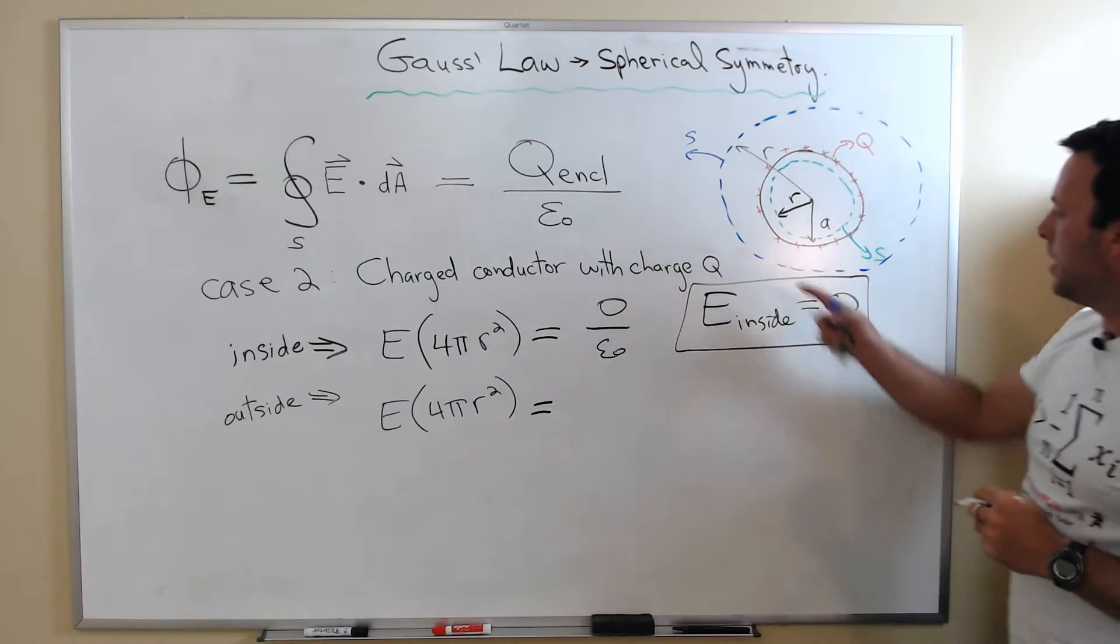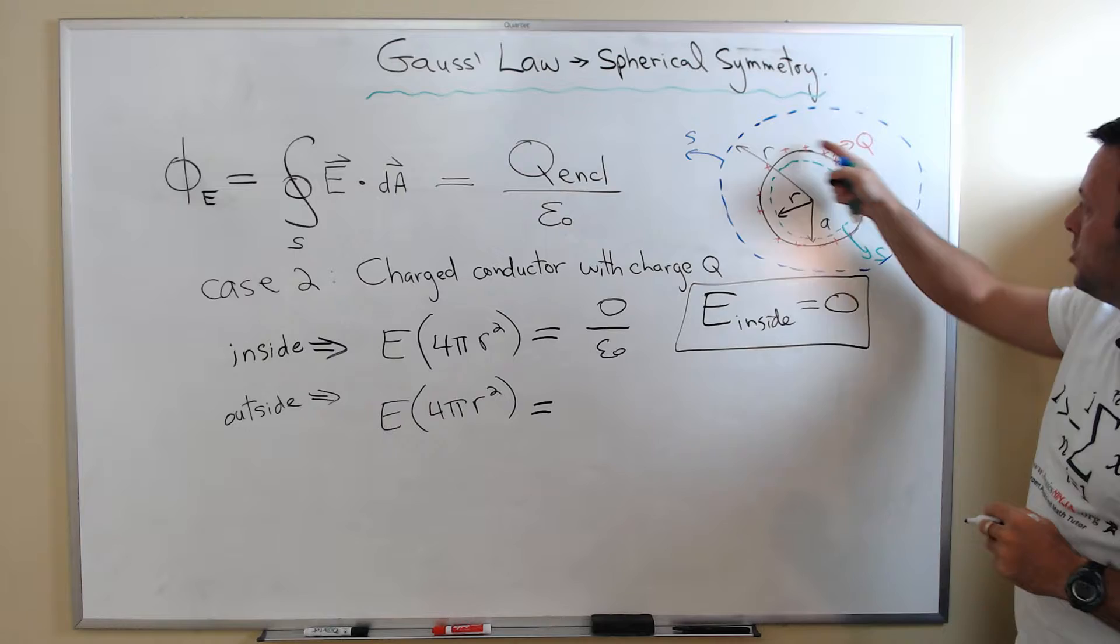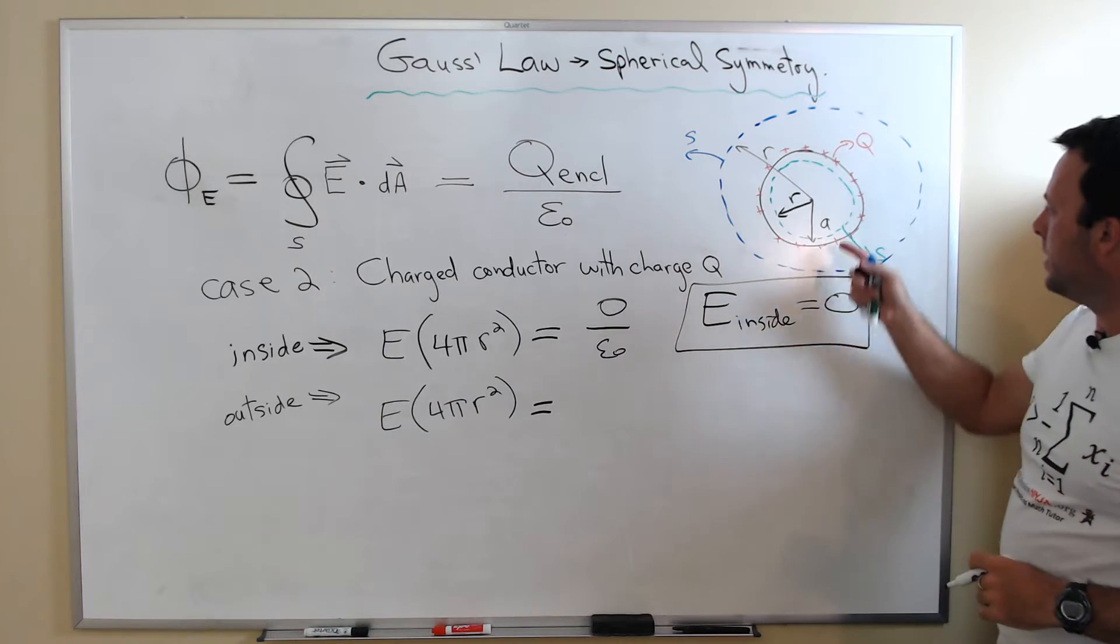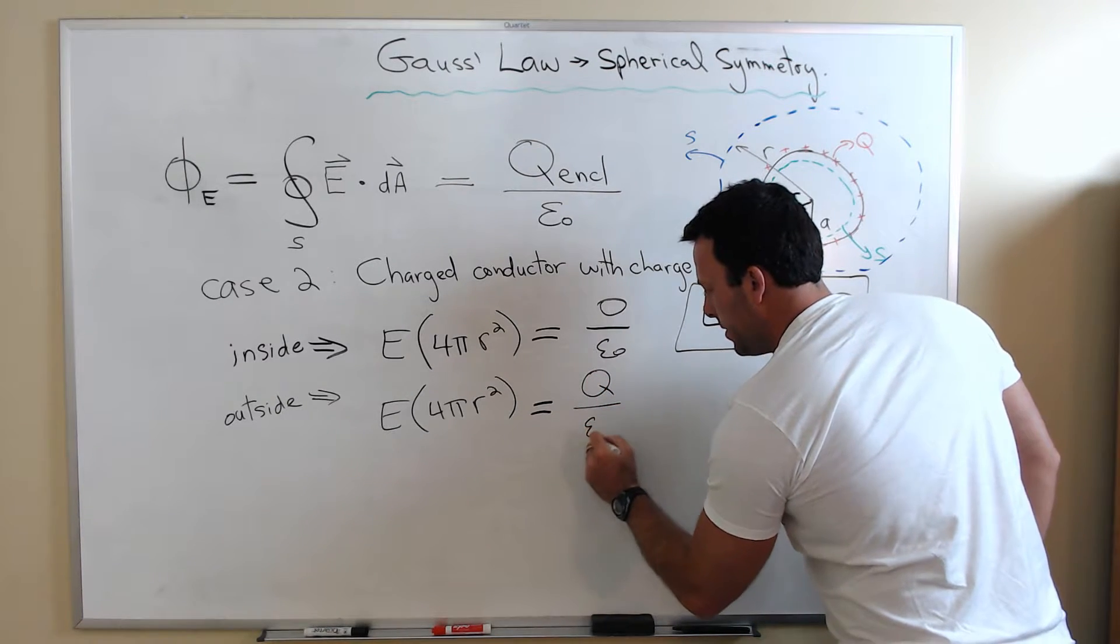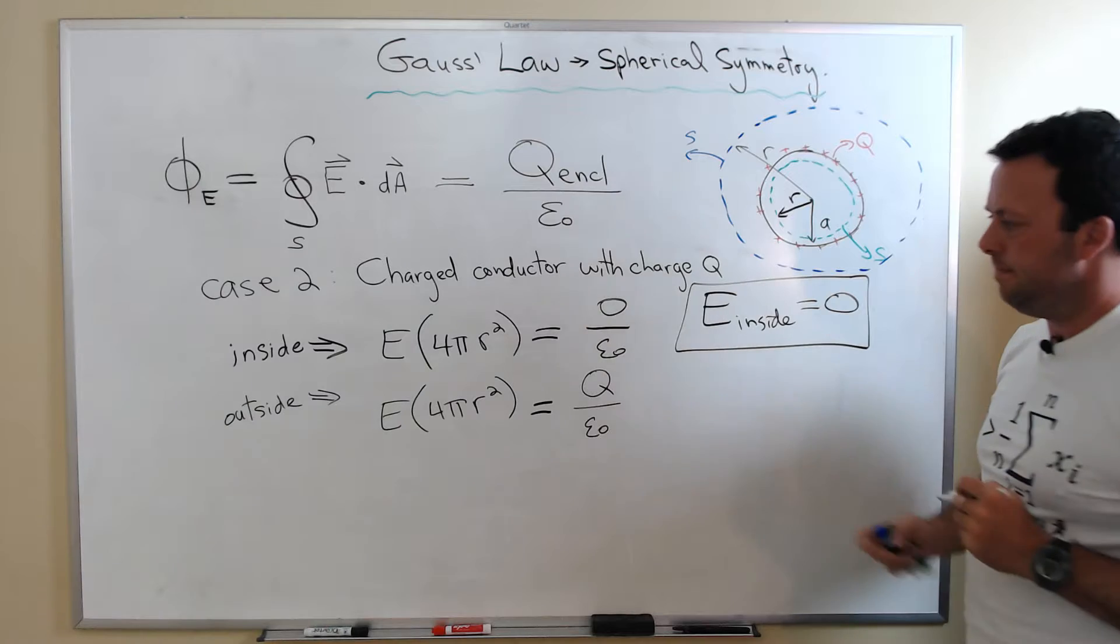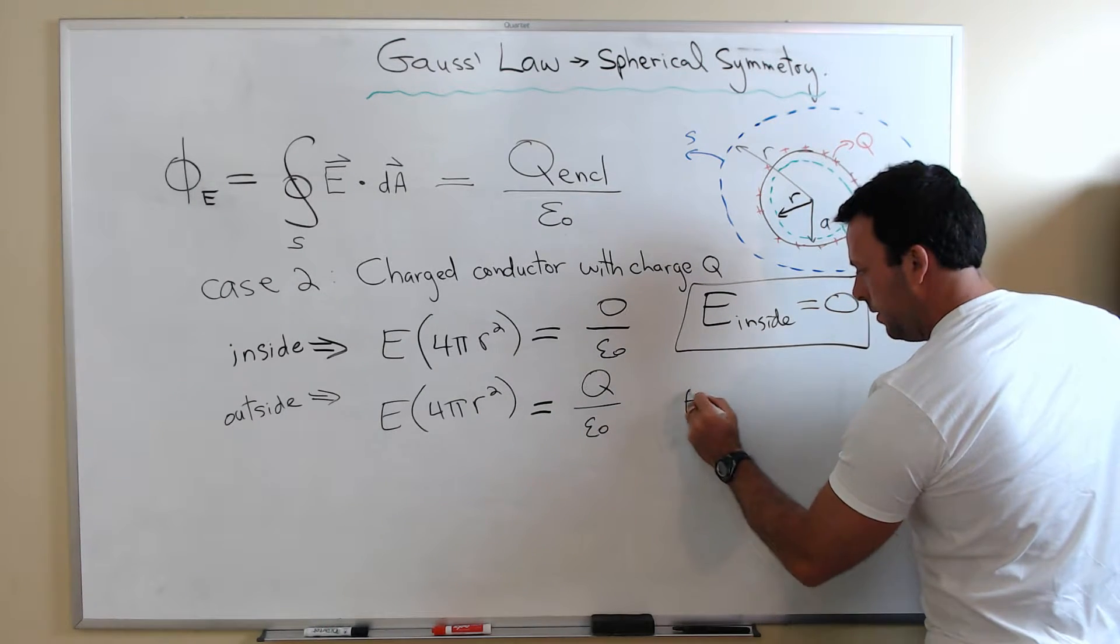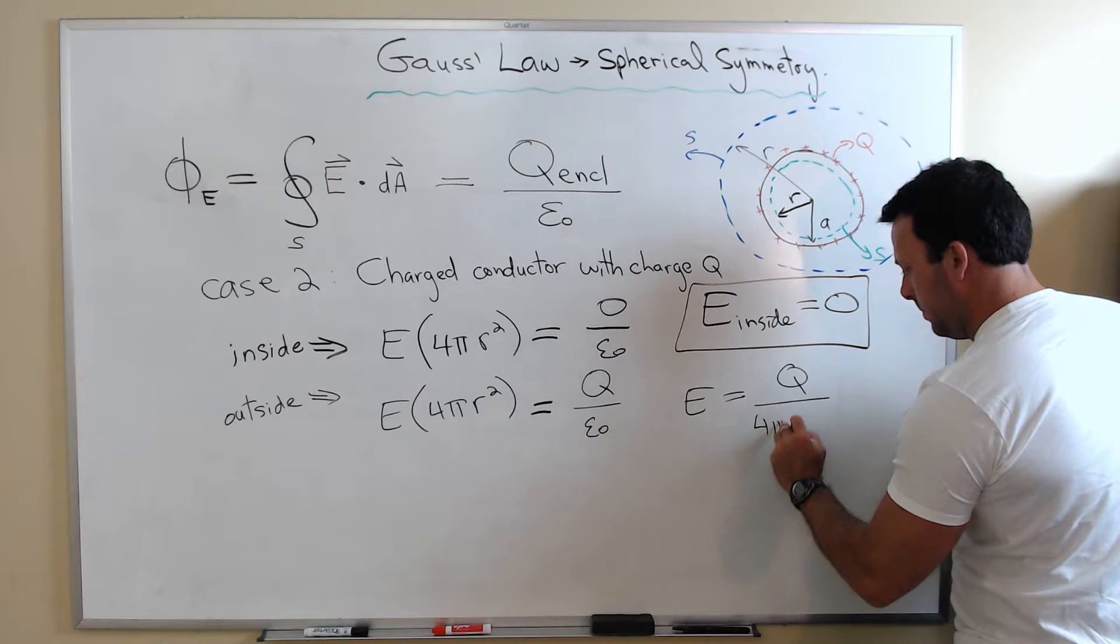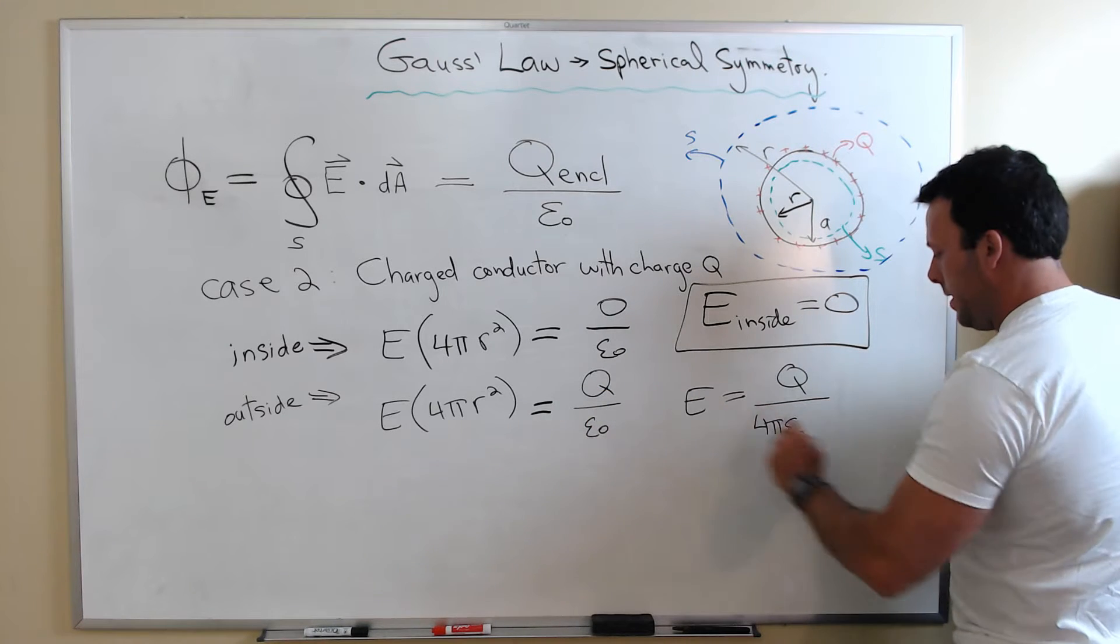So how much charge is enclosed by this blue surface over here? Well, it's the total charge that I put on the conducting surface over here. So that's Q divided by epsilon zero. Again, if you isolate for the electric field, what you find is Q divided by 4 pi epsilon zero R squared.